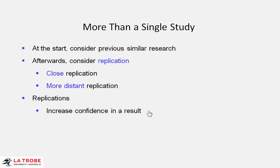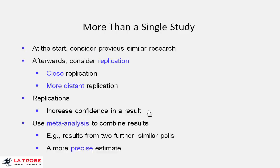Usually, when you see a research result, the first question to ask is: has it been replicated? Once we have more than a single result, then we can use meta-analysis to combine those results.